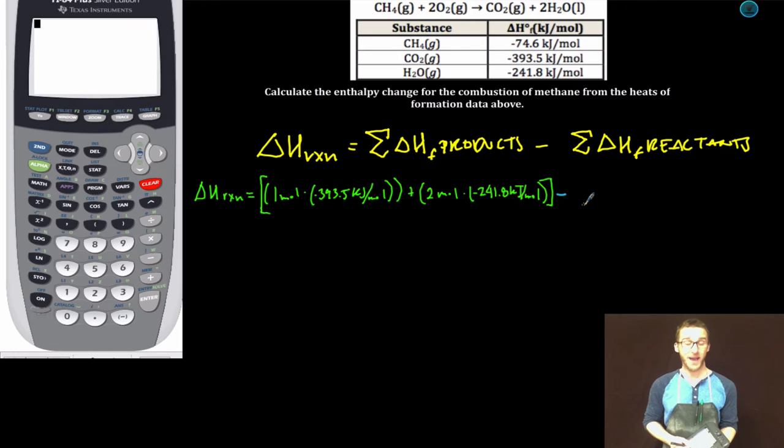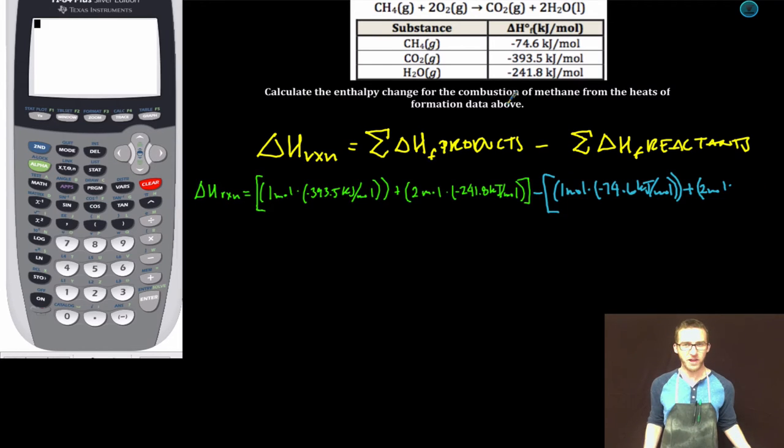We're then going to subtract the sum of the heats of formation of the reactants. Got one mole of my methane. I'm going to add to that two moles. Oh man, what the heck is this? An incomplete list? There is no heat of formation of oxygen gas provided. But then I remember oxygen gas is an element in its standard state so its heat of formation zero kilojoules per mole. Good idea to include that in your work to make sure your grader knows that you know that as well.